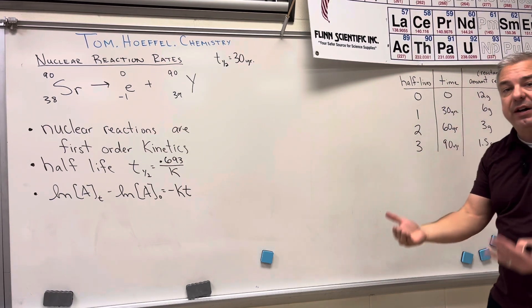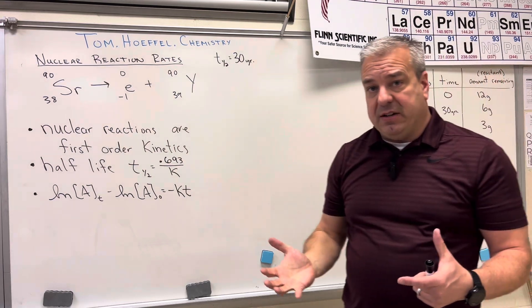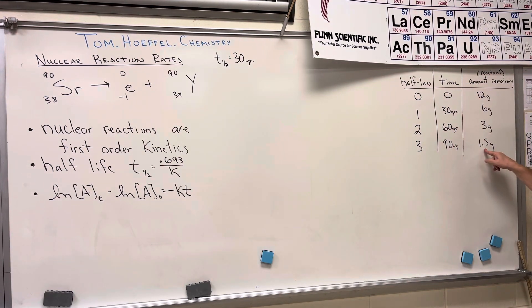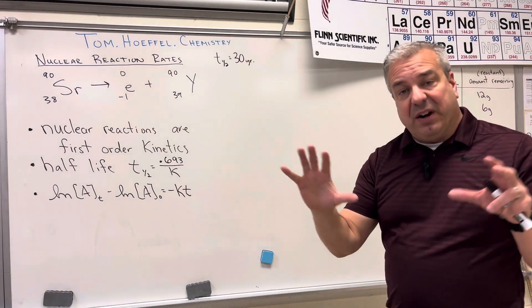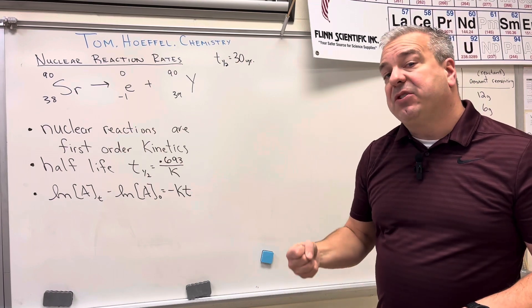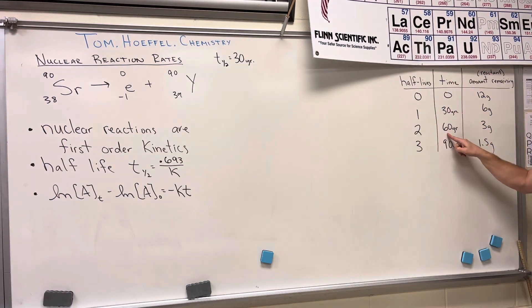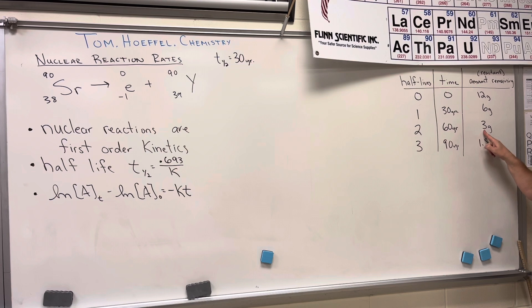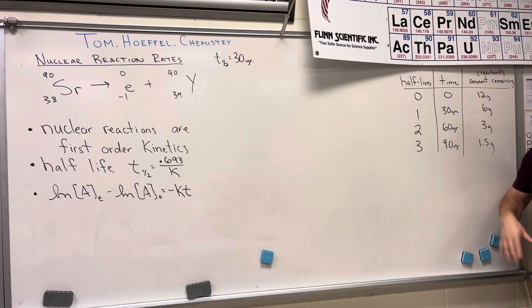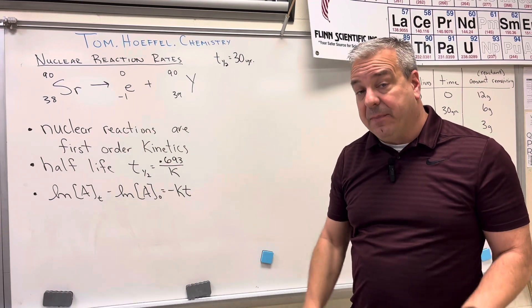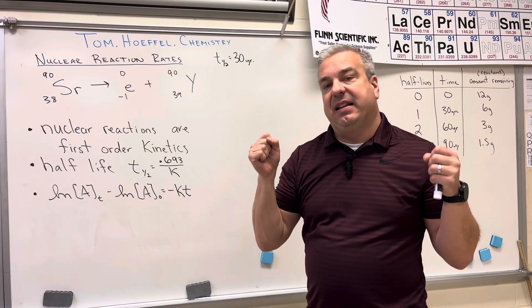For example, a question might be: how much strontium-90 is remaining after 90 years? You'd come to 90 years and say there's 1.5 grams remaining. A slightly more advanced question: how much strontium-90 reacted after 60 years? At 60 years there are three grams remaining out of 12 grams initially, which means nine grams reacted.